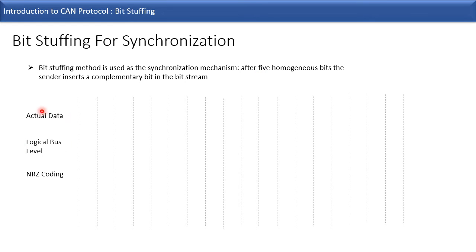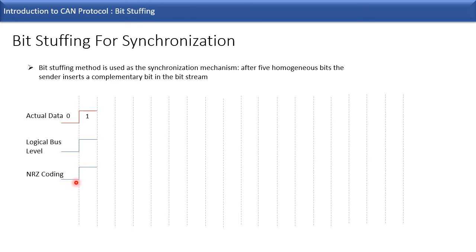We have three rows in the animation. The first row is the actual data to be transmitted, the second is the logical bus level after bit stuffing, and the third is the NRZ coding representation which equals the logical bus level. The first bit is bus level zero, so the logical bus level and NRZ coding are also zero. Next we have bus level one, and the same levels are represented for the logical bus level and NRZ coding.